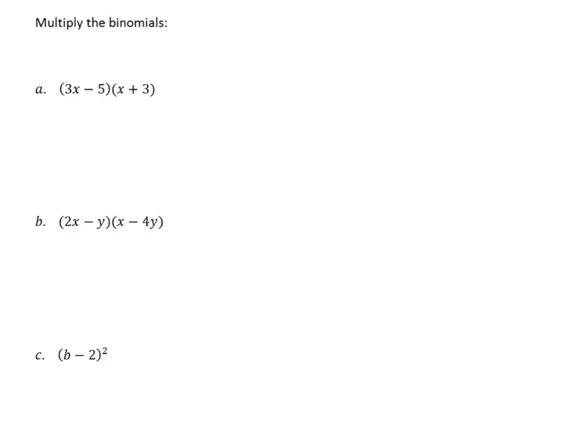But to multiply binomials, we're going to use this acronym FOIL. And F stands for the first term. We're going to multiply the first term, so that's going to be here times here. We multiply the first terms together. So 3x times x would be 3x squared.